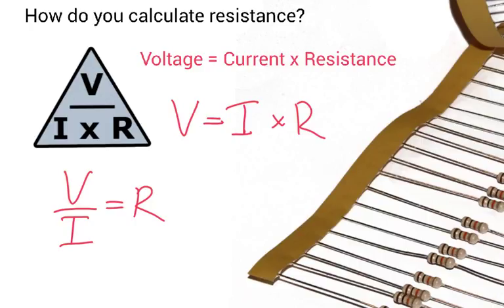The triangle here: if you want to find resistance, voltage divided by the current. If you're looking for the current, voltage divided by the resistance. And if you're looking for the voltage, it's the current times by the resistance.